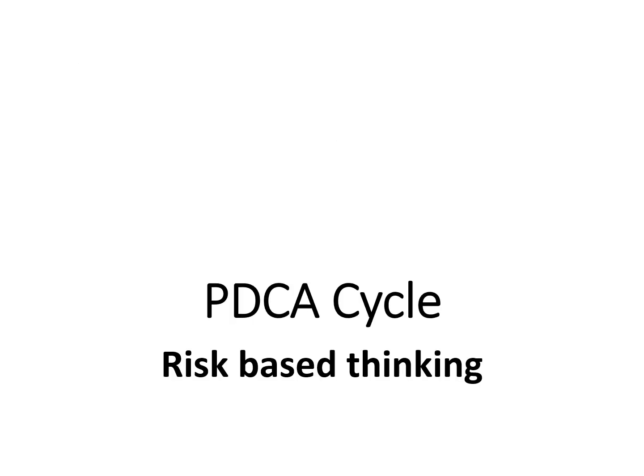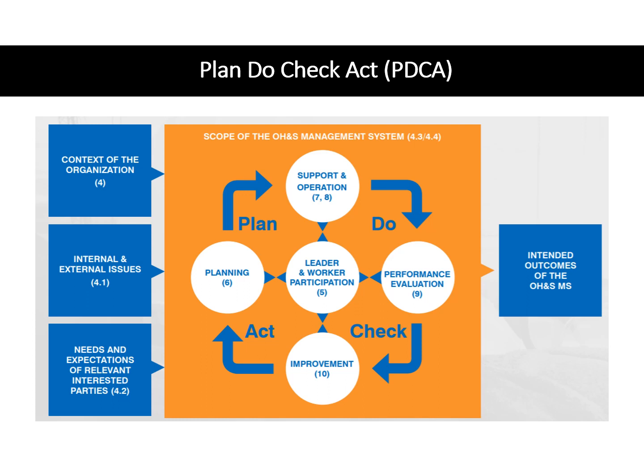ISO recommends the PDCA cycle for the various processes of the EOMS, and risk-based thinking supplements the PDCA cycle. PDCA stands for Plan, Do, Check, and Act. The PDCA cycle asserts that management actions are effective through careful adoption of this sequence: Plan by establishing objectives, processes, and resources to meet needs and requirements; Do by implementing what was planned; Check by monitoring and measuring results and identifying improvements; and Act by taking actions to improve.